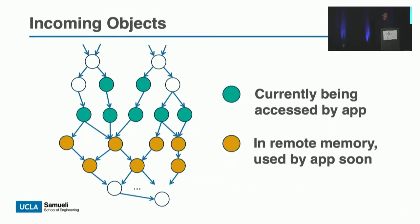For the second challenge — what objects will be accessed by applications soon and should be regarded as incoming — in high-level managed languages, objects are accessed through references, so incoming objects are typically just a few references away from the objects the application is currently using. Using the previous method, we already have those local objects as green nodes. The incoming objects represented by yellow nodes are just a few references away, so we let GC trace a small number of references forward from the green nodes.